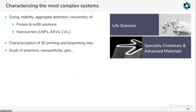In the sector of specialty chemicals and advanced materials, we typically look at inks used for 3D printing or bioprinting. One can also characterize any system from polymers to resins, nanoparticles, and gel-like samples — both inorganic and organic.